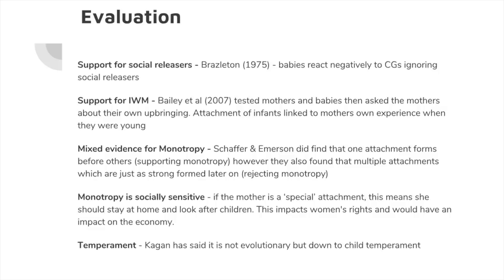Finally, Kagan has said maybe it's not who feeds the infant, as Dollard and Miller would say, and maybe it's not just that we've evolved to have a certain type of attachment. Kagan says: what about the children themselves? Children might be born different — individual differences. You might get a naturally fussy child, a naturally happy child, a naturally outgoing child. This is known as temperament — the personality of the infant. Surely that has an impact on how the parent parents. They're not just a blank slate. That's another good evaluative point.